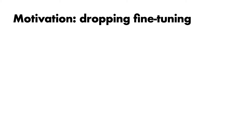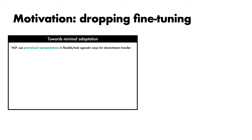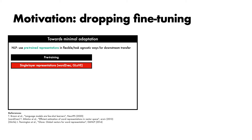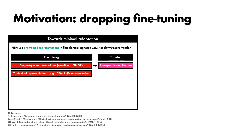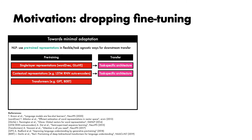In natural language processing systems, there has been a trend towards pre-trained language representations that are increasingly flexible and task-agnostic for downstream transfer. Early instrumental examples of pre-training strategies include single-layer representations such as Word2Vec and GloVe that produced word vectors that could then be transferred to a downstream task by feeding them into a task-specific architecture. Building on these successes, a number of methods such as LSTM-RNN autoencoders, as studied by Dai et al., demonstrated the benefits of contextual representations, again using task-specific architectures. More recently, methods built on transformers such as GPT and BERT have learned increasingly powerful representations that can be effectively adapted simply through fine-tuning, without the need for task-specific architectures.